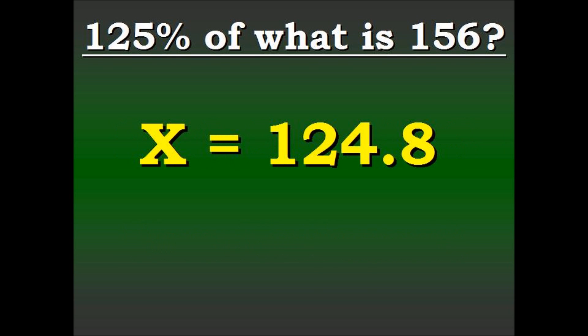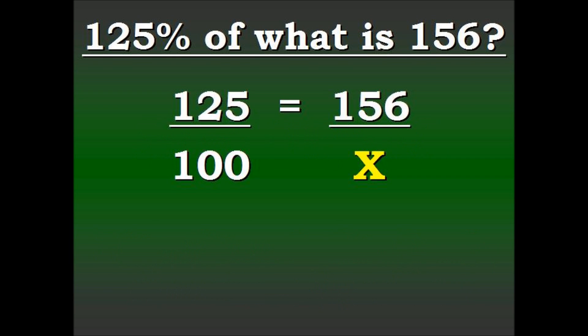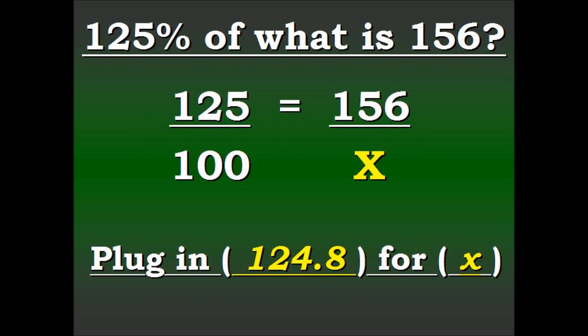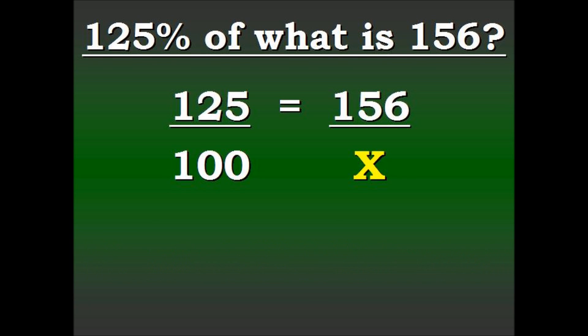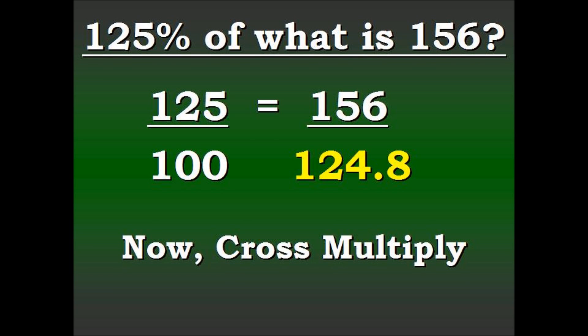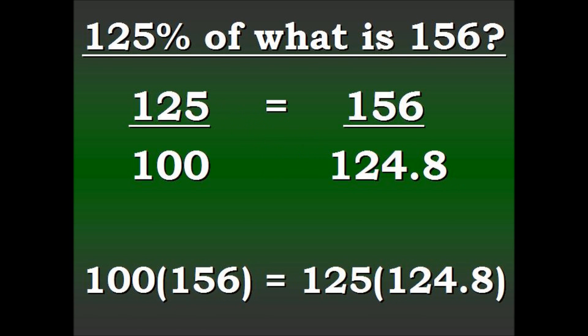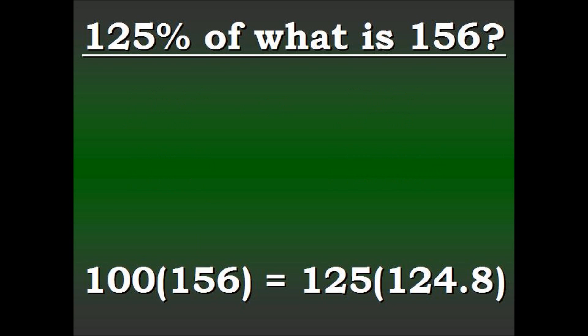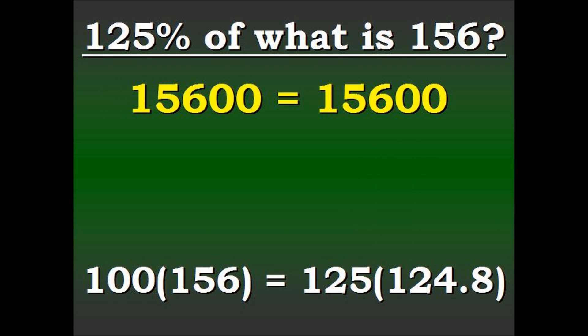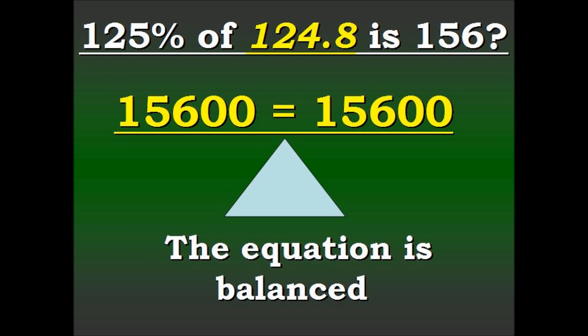Now let's look at another point to make sure this is going to work. We're going to plug it again into the original equation. We're going to remove X and put in 124.8. Again, we're going to cross multiply 100 times 156 equals 125 times 124.8. We're going to clean that up. Do a little multiplication. And it seems like it's balanced. So if the equation is balanced, the 124.8 is the true solution.